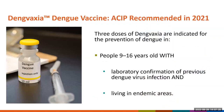In 2021, a dengue vaccine was recommended for use by the ACIP in dengue endemic areas of the United States. This vaccine, called Dengvaxia, includes three doses and is recommended for people 9 to 16 years old with evidence of laboratory-confirmed previous dengue infection and living in dengue endemic areas. It is not recommended for travelers to endemic areas.